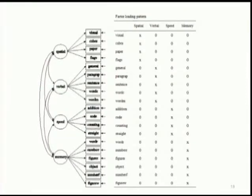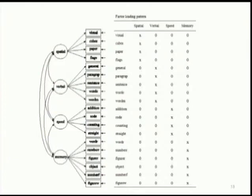Here's the factor loading pattern matrix. An X represents that the factor loading will be estimated; zeros represent factor loadings fixed at zero. Visual, cubes, paper, and flags load on spatial; paragraph, sentence, word, and word-count items load on verbal, and so on. Every factor loading fixed at zero will not be estimated. This is a simple structure CFA model with lots of zero factor loadings — that's going to be the key.